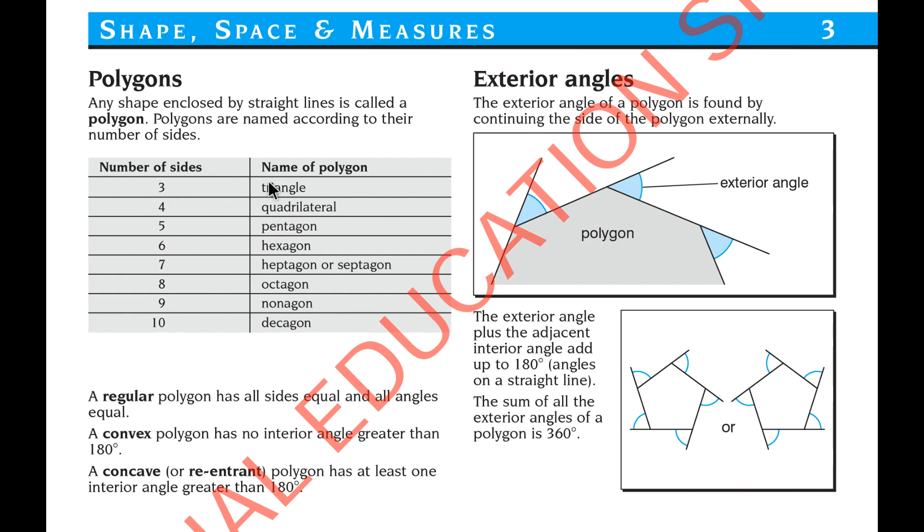Three sides means a triangle. Four sides means a quadrilateral. Five sides means pentagon. Six sides means hexagon. Seven sides means heptagon—some people say septagon also. Eight sides means octagon. Nine sides means nonagon. Ten sides means decagon. Normally you should know up to ten sides; more than ten sides are not commonly used.